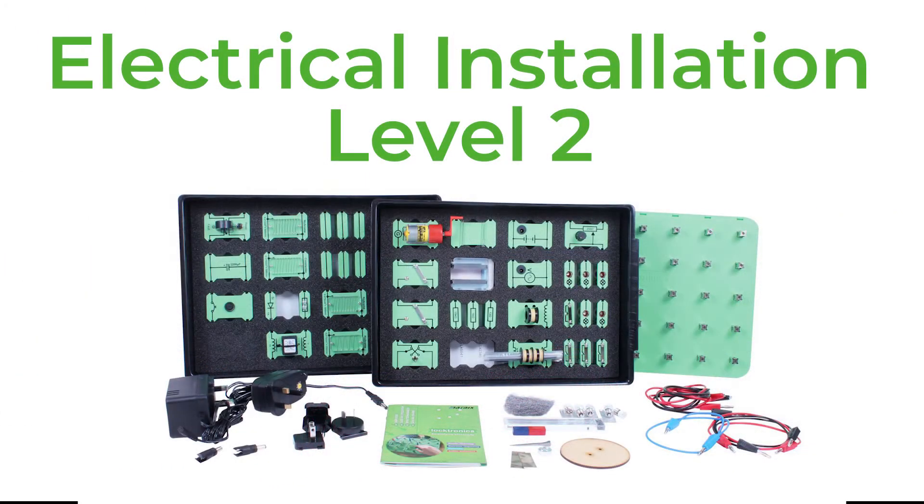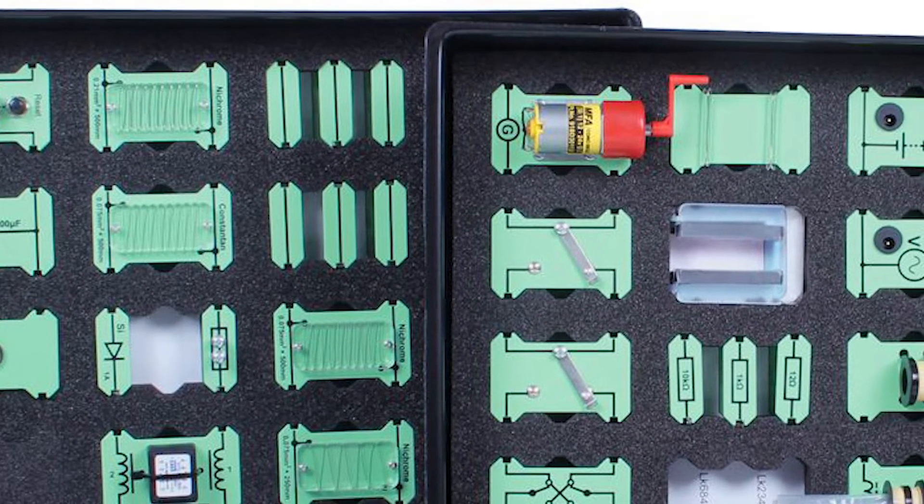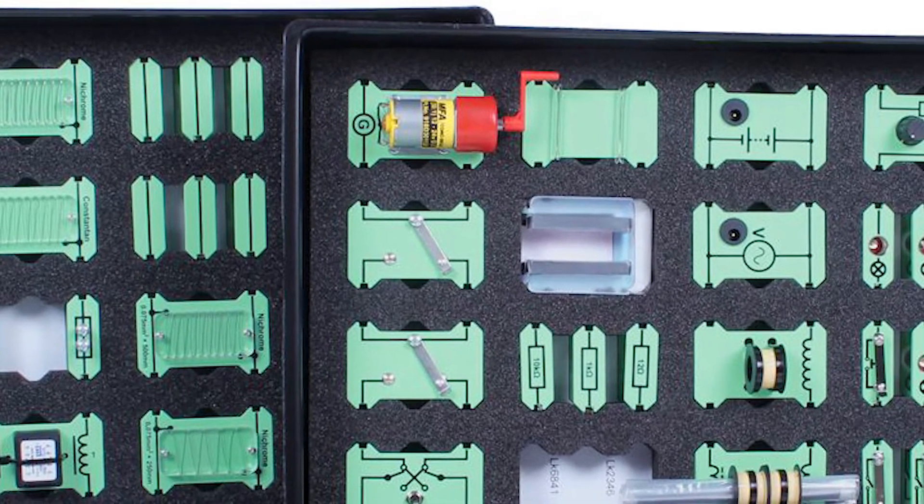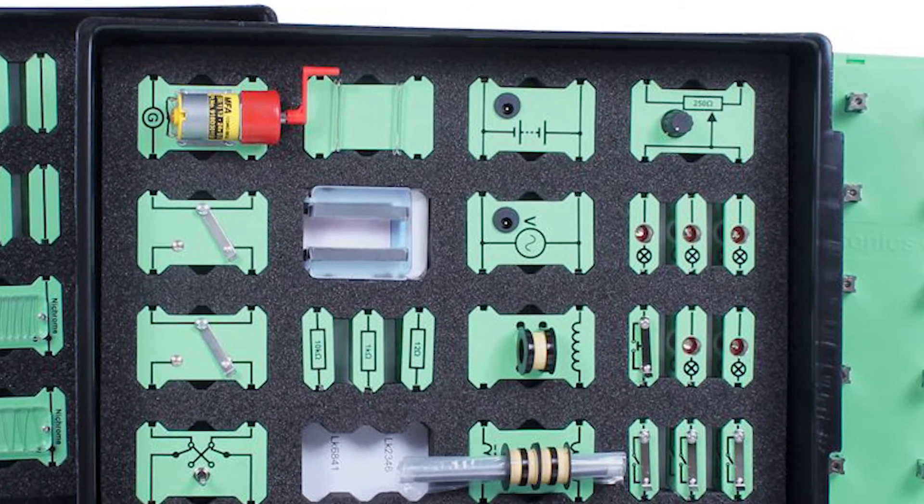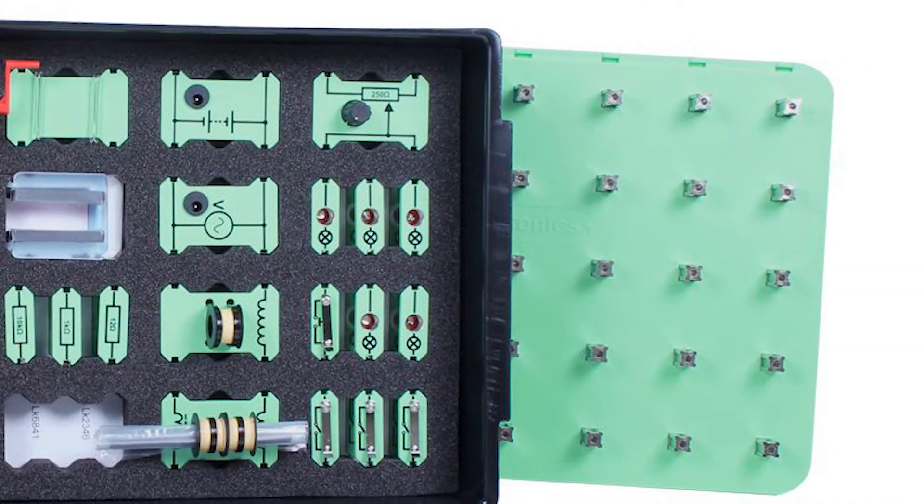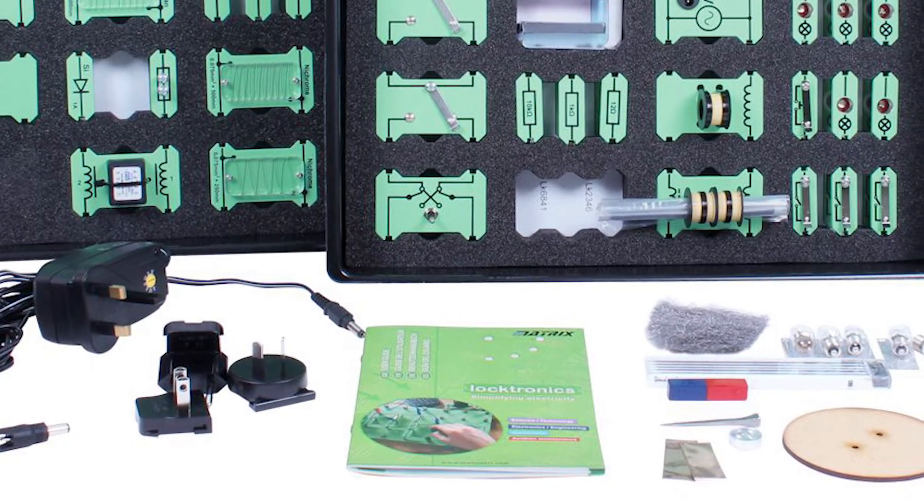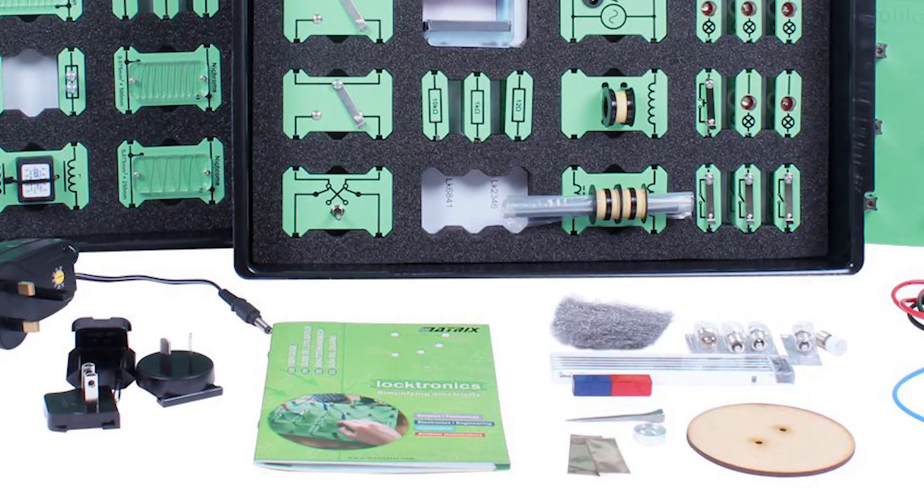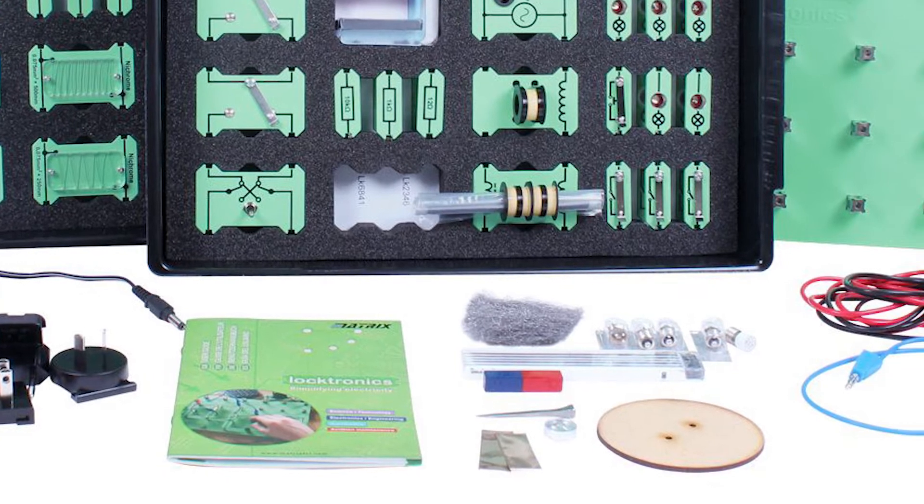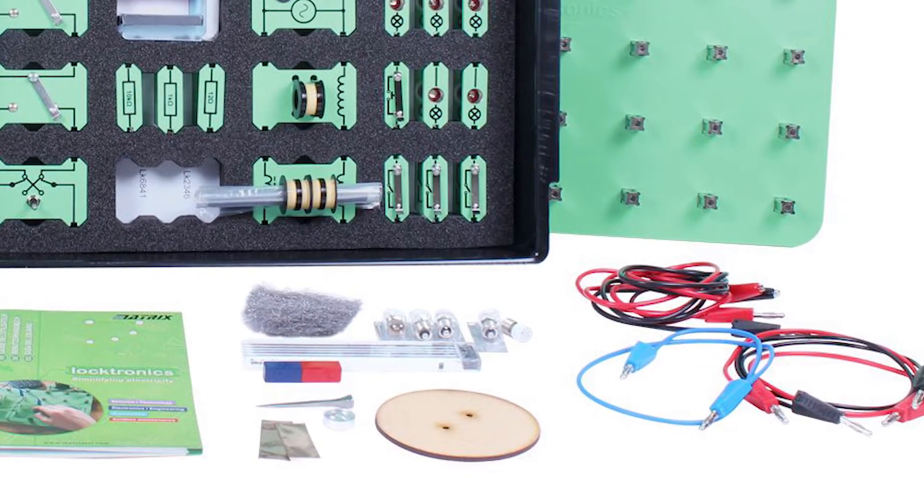At level two electrical installation, we offer a level two kit. This kit develops and furthers the knowledge learned at the level one kit and takes it to that next stage. It includes topics like principles of electricity, the principles of basic electrical circuits, electromagnetism, the operating principles of a range of electrical equipment, the principles of AC theory, and it also includes electrical safety and touches upon RCDs and circuit breakers.